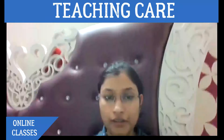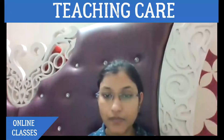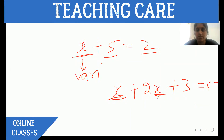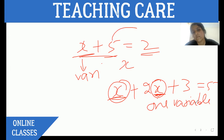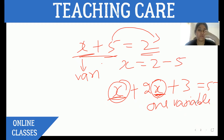We were talking about linear equations when only one type of variable is there — we called it a linear equation in one variable. Earlier we have done this kind of thing: one variable is there, like x plus 5 equals 2. You can easily find the value of x by the transposing method — taking this to the next side, it becomes 2 minus 5, giving minus 3.